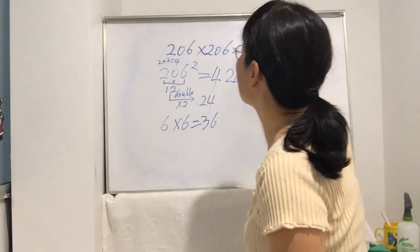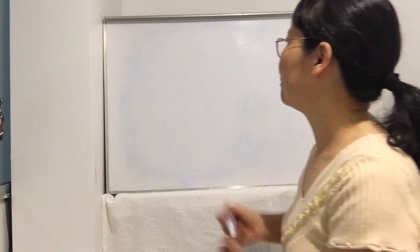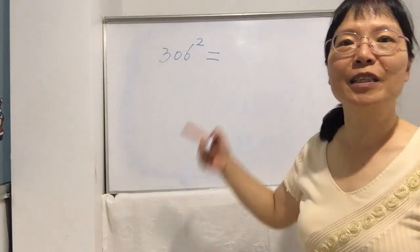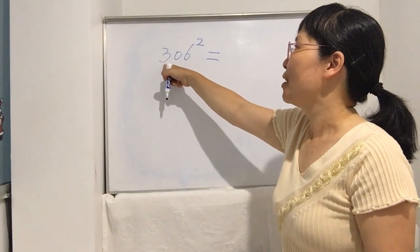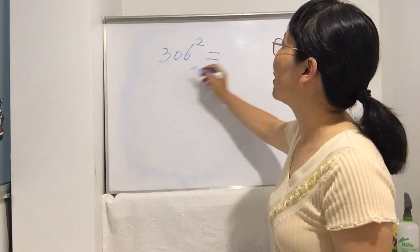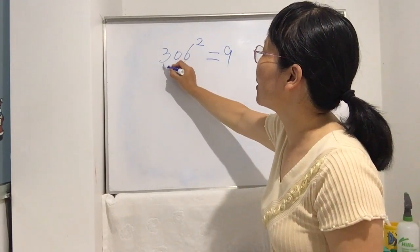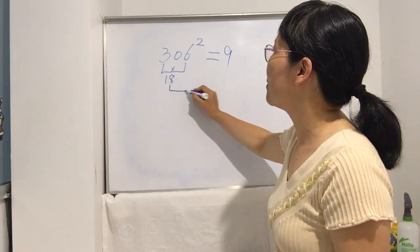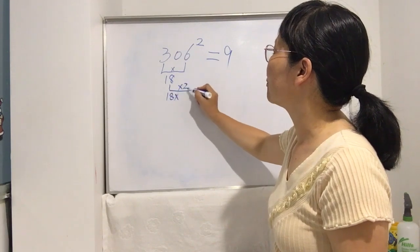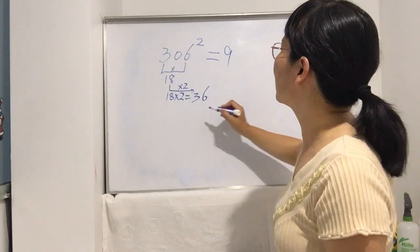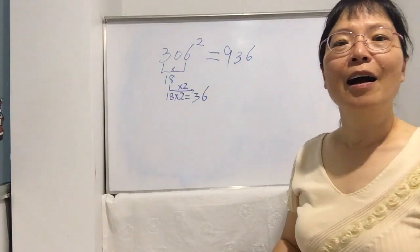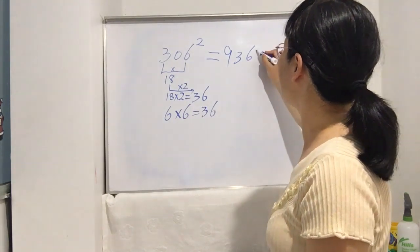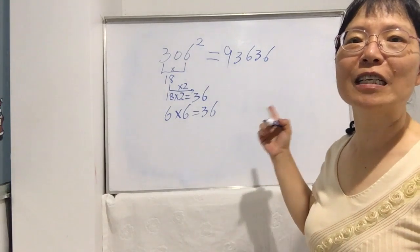Now let's try one together: 306 squared. Using the technique we just learned — first, hundreds digit: three times three is nine. Second step: three times six is eighteen, then double it — eighteen times two is thirty-six. Write thirty-six in the middle. Last step: six times six is thirty-six. That's the answer.